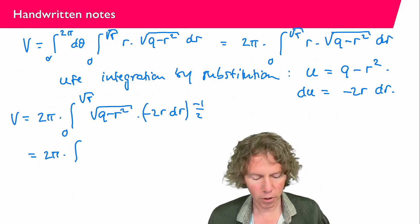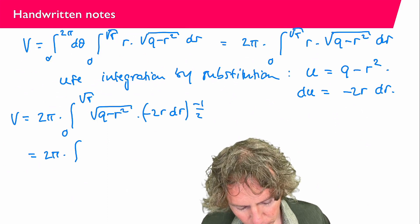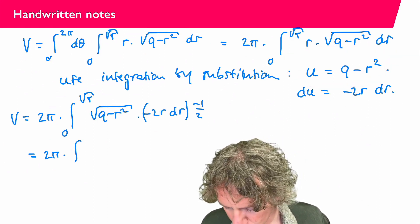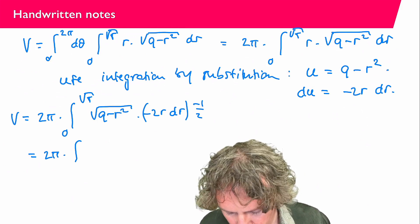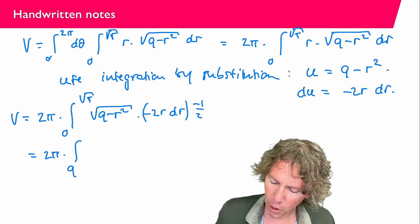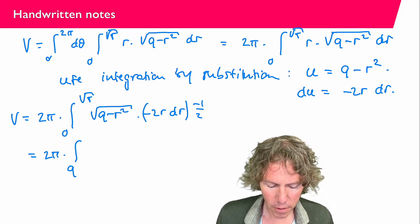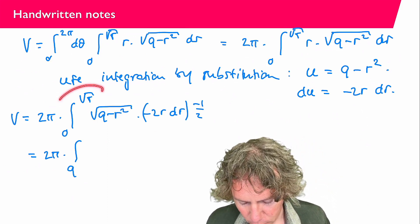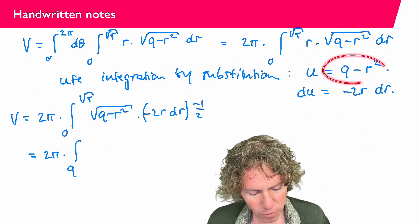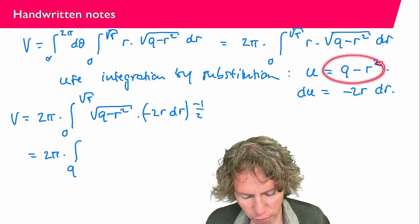If r equals 0. So then apparently u is 9. So I'm going to integrate from 9. Up to if r equals square root of 5. Then this here becomes 9 minus 5 is 4.